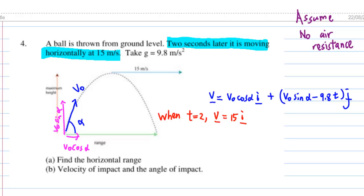Now we use another condition. It stated that two seconds later, it is moving horizontally at 15 meters per second. That means that when t equal to 2, V equal to 15 i.